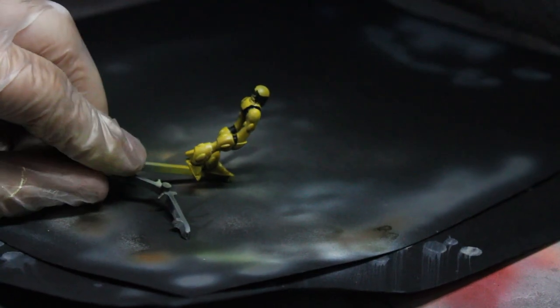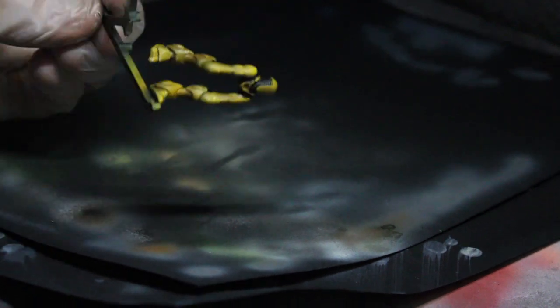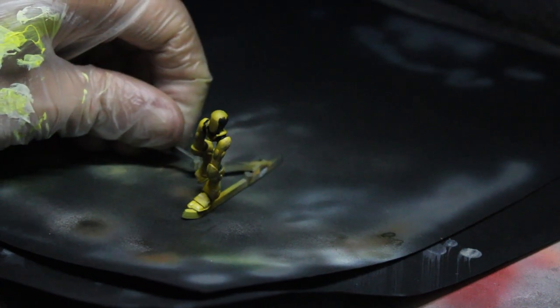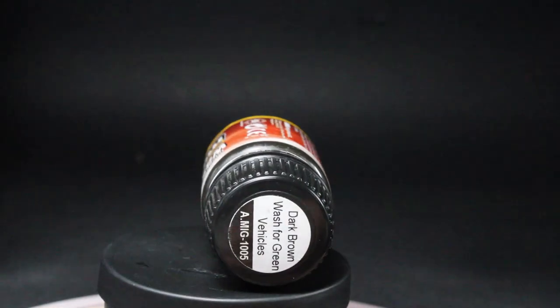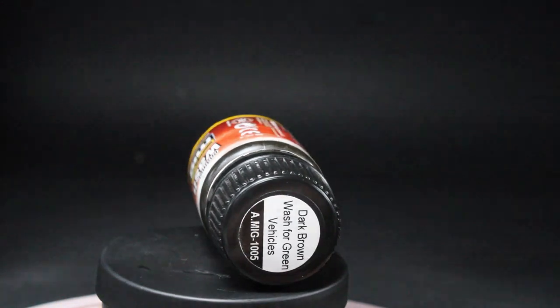Now grab about a one-to-one ratio of gloss varnish and thinner and apply with a pressure of around 30 pounds per square inch over the entire model. Allow this varnish to dry for 10 to 15 minutes.